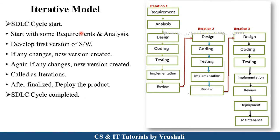Now the first thing is — what exactly is the iterative model? In this particular diagram, this is the structure of the iterative model. As we know, every software development life cycle starts with the requirement and analysis phase. There is a project analyst who collects the requirements from the customer and analyzes those requirements. This is the first phase in the software development life cycle.